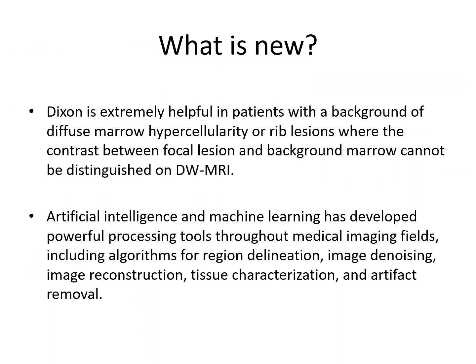What is new? Emphasis has been placed on Dixon imaging, which is extremely helpful in patients with a background of diffuse marrow hypercellularity or rib lesions. In such cases, the highly cellular marrow can produce false negative diffusion weighted interpretations. Dixon imaging helps differentiate whether significant focal lesions are truly present. These Dixon images are obtained using 3D gradient echo sequences and run complementary to diffusion weighted imaging.